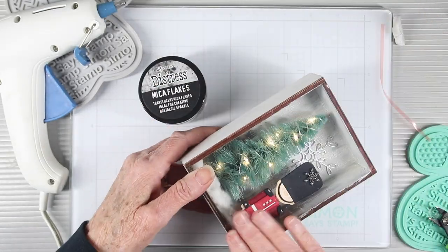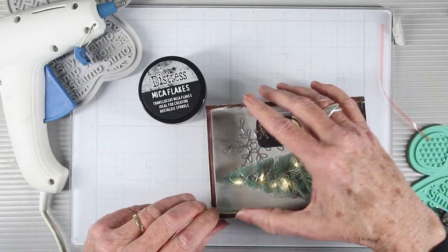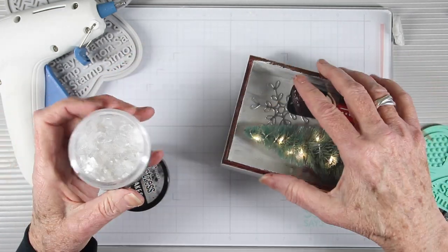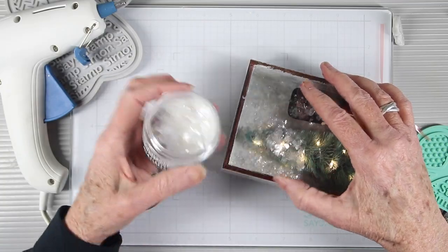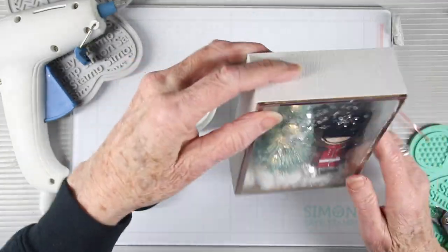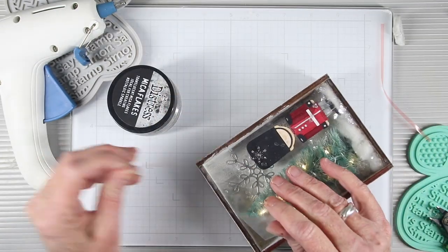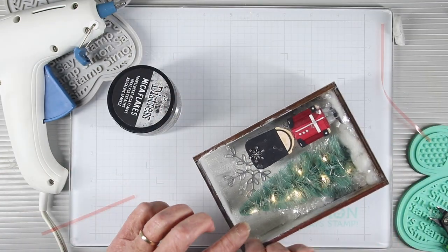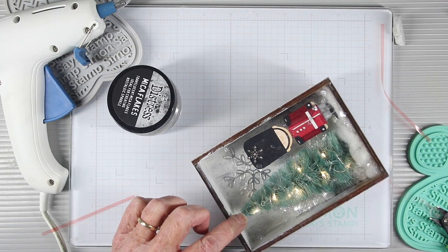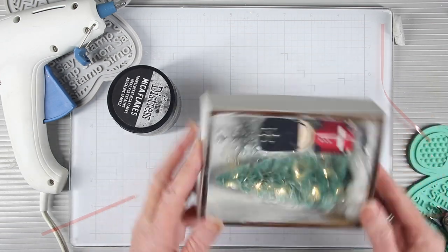Next I'll lift the corner and I'll use some of the mica flakes from Tim Holtz and I'll start sprinkling these inside and then I can shake this around and make sure I have the amount that I want. Then I can remove the rest of the adhesive strips and press everything down in place. This is a really easy way to make a fun interactive display for the holidays with a little bit of shaker action.